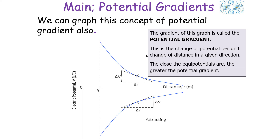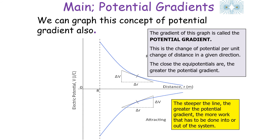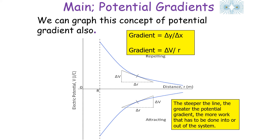We can graph this idea of potential gradient. If we place V against R, the gradient of the graph is the potential gradient, because it's the change of potential per unit change of distance in a given direction. The closer the equipotentials, the greater the potential gradient. This graph plots electrical potential against the distance from the charged object producing the electrical field. The steeper the line, the greater the potential gradient and the more work that has to be done into or out of a system to move a charged particle.